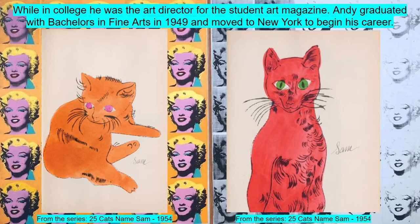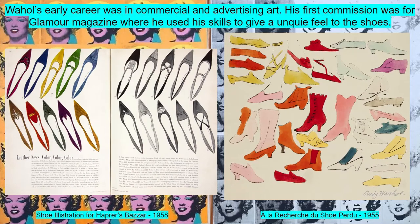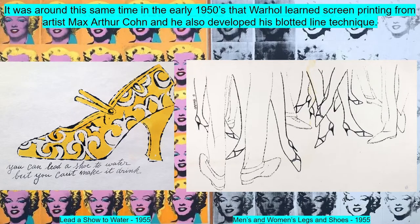Andy graduated with a bachelor's in fine arts in 1949 and moved to New York City to begin his career in magazine illustration and advertising. Warhol's early career was in commercial and advertising art. His first commission was for Glamour magazine, where he used his skills to give a unique feel to the shoes. It was also around the same time in the early 1950s that Warhol learned screen printing from artist Max Arthur Cohn.